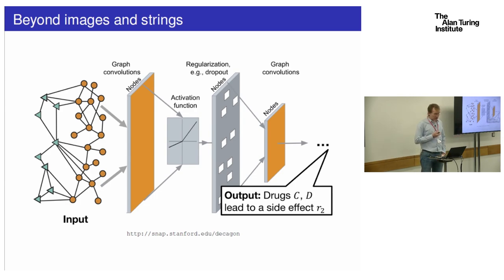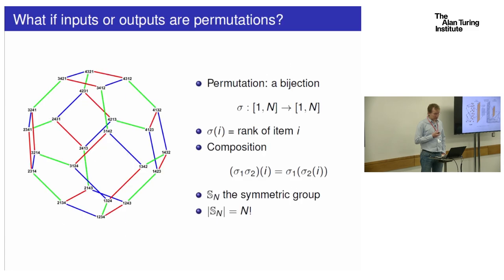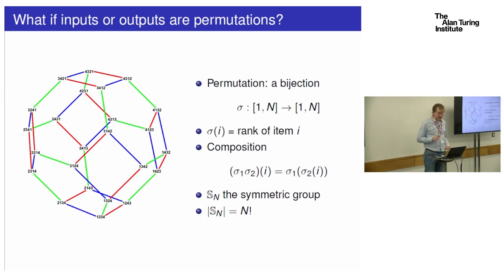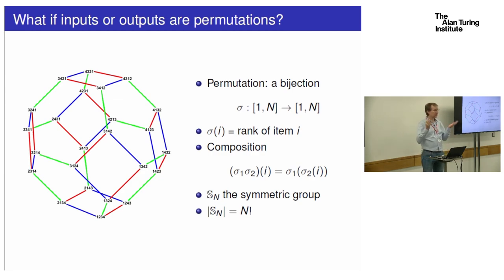I'm not going to talk about graphs today — I'm going to talk about permutations. The mathematical definition is just a bijection from the set of integers 1 to n to itself. This set is called a symmetric group.